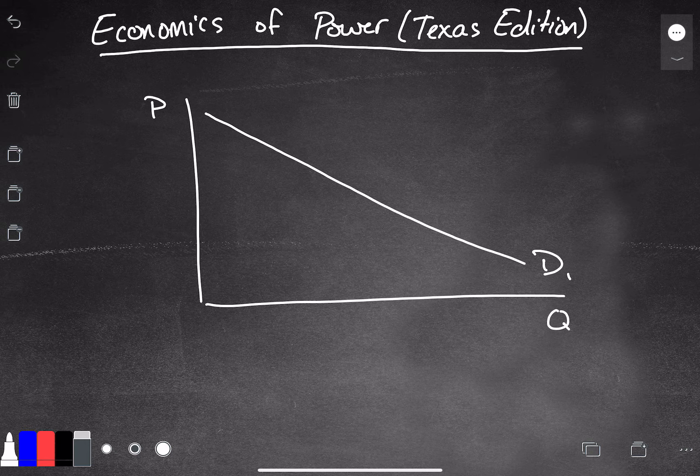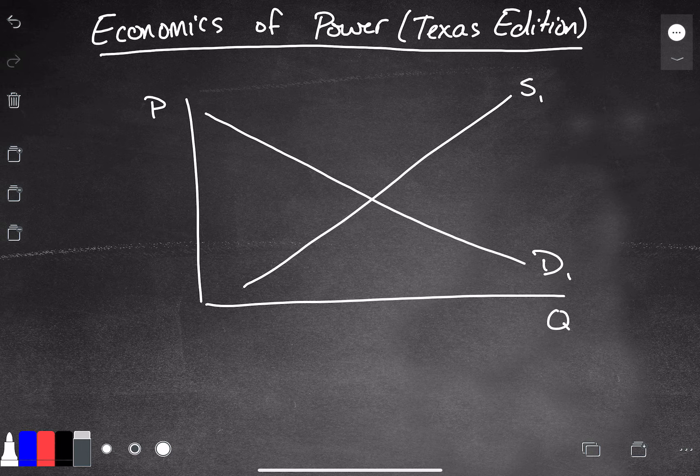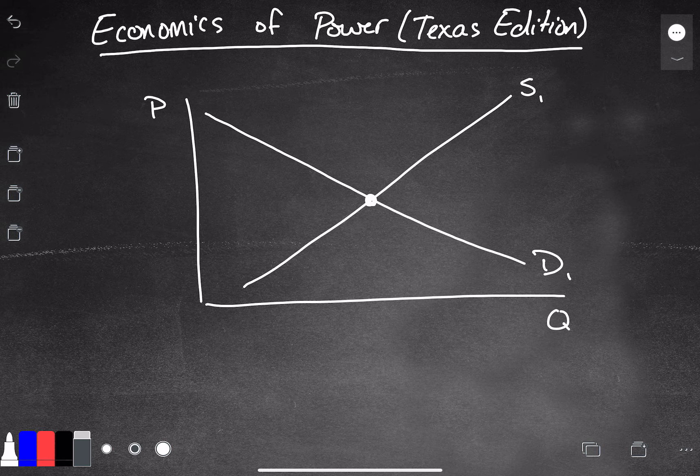We also have an upward sloping supply curve. And that again makes sense because at higher prices, the producers of electricity or any type of power in general are going to be willing to produce more electricity. So we come to our equilibrium.